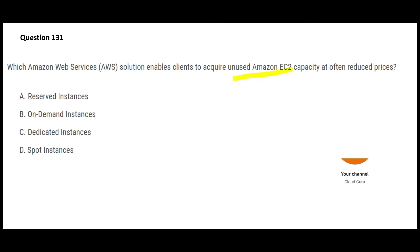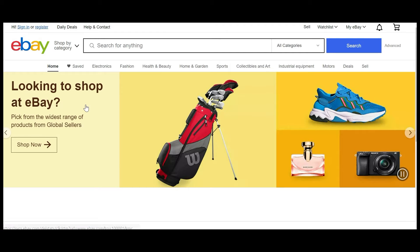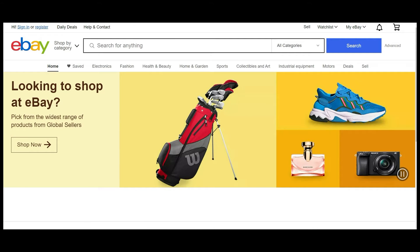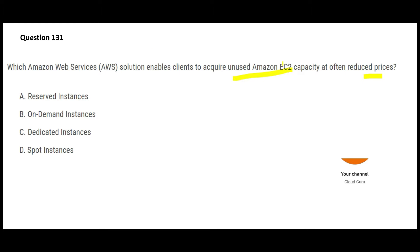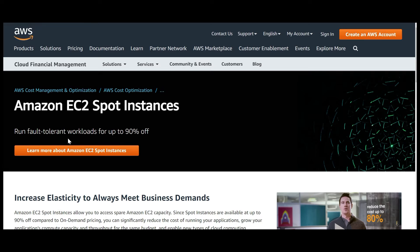The question is: you want to acquire unused EC2 instances at reduced prices. It's something like a bidding system — earlier we had eBay, where you bid for products and whoever has the highest bid gets the product. We need a solution similar to this. Out of the four options, only Spot Instances has this capability.